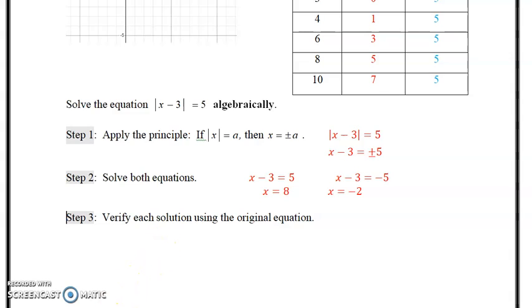Verify each solution using the original equation. So we just take the original equation. This is what I did when we were working through it to verify. So we'll verify both. And we put our x value in at 8. And we put our x value in at negative 2. If we have the absolute value of 5 is equal to 5. And we have the absolute value of negative 5 is equal to 5. And obviously, 5 is equal to 5 in both scenarios.